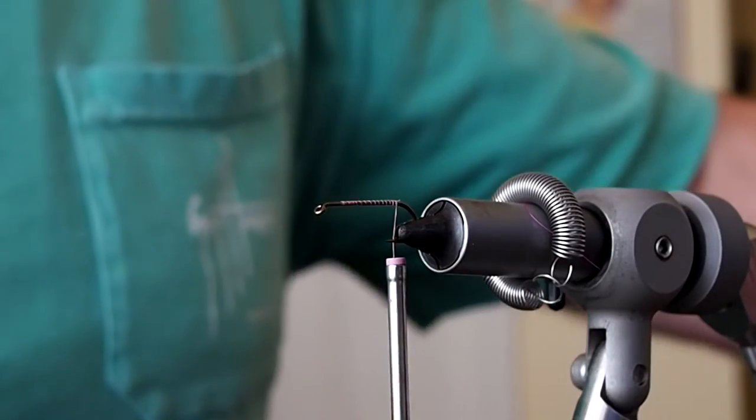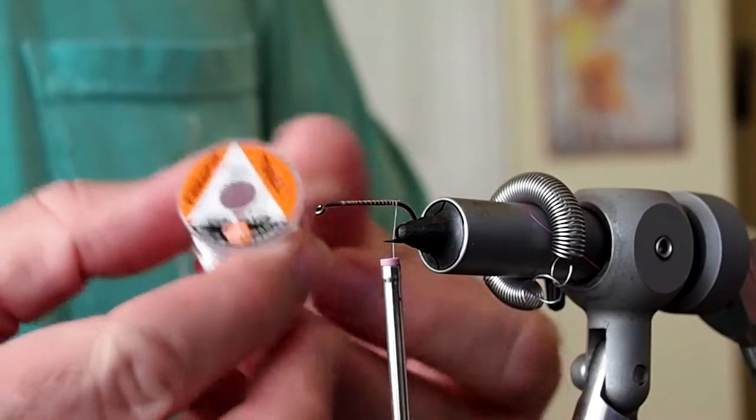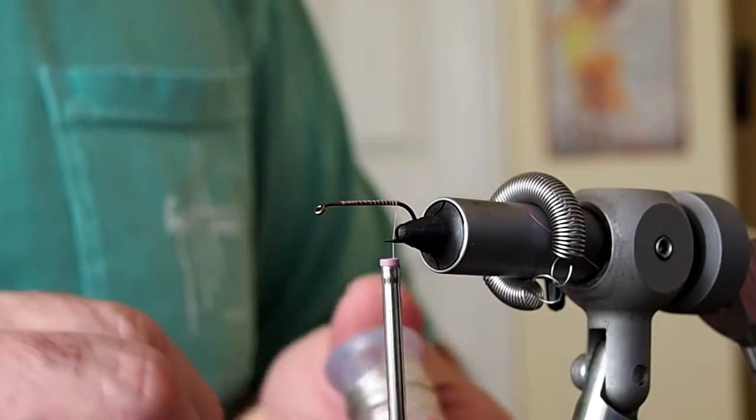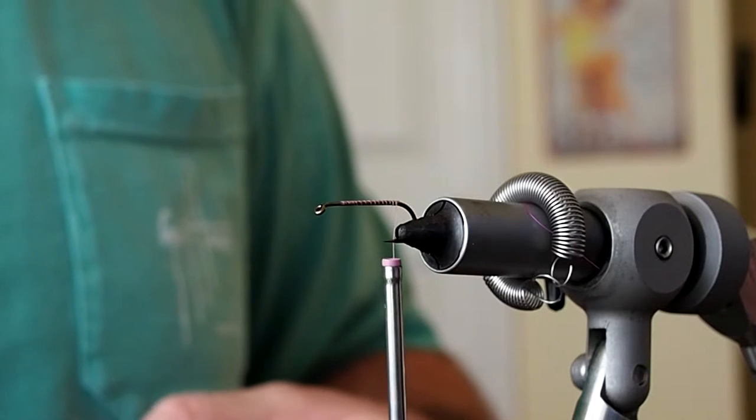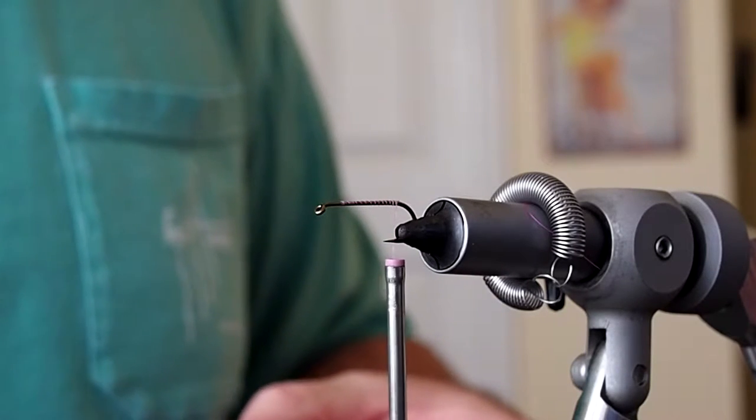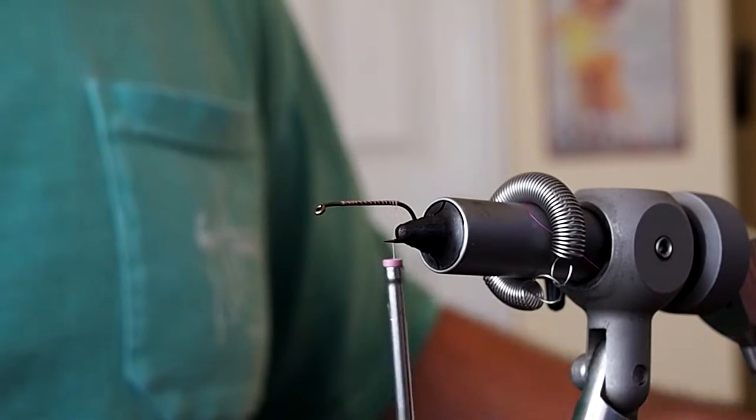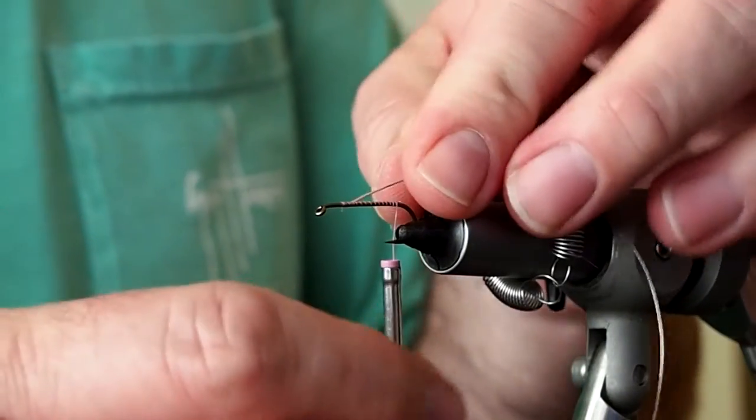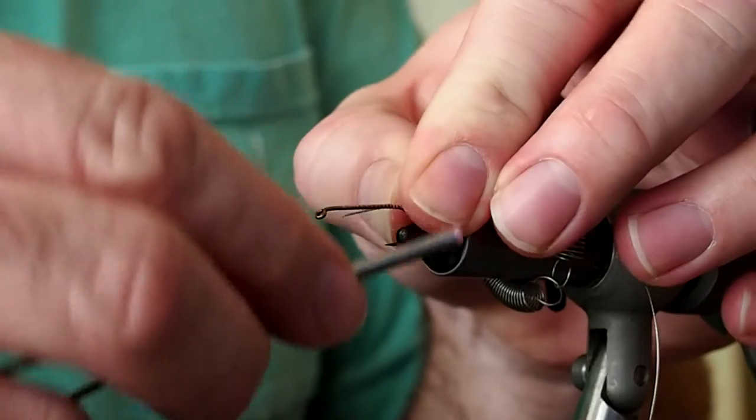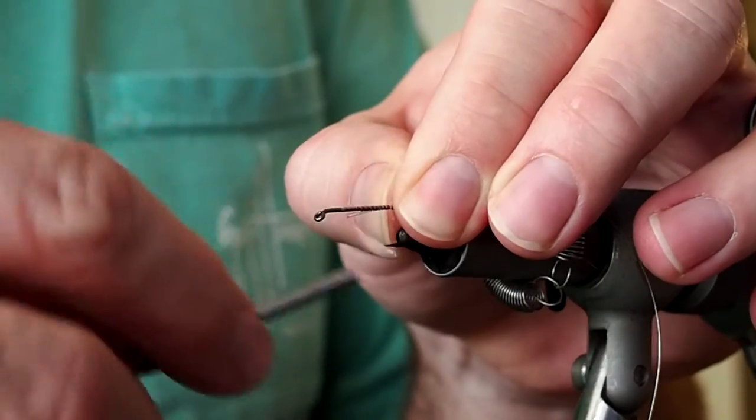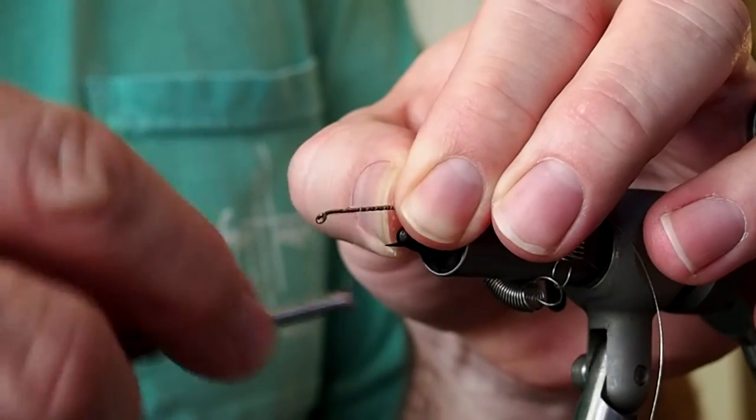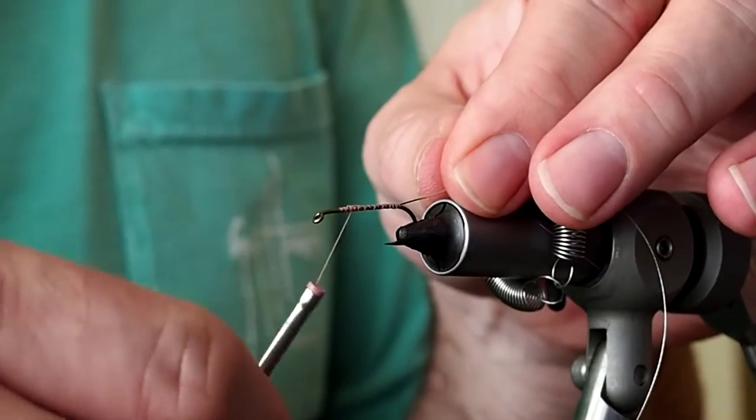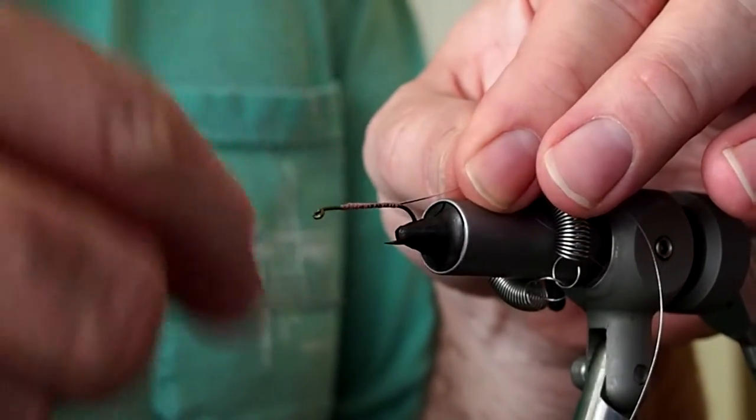And then I'm going to tie in some medium oval tinsel and I need probably about 6 inches of that. I like to tie that in at the butt and just leave a tag long enough to come all the way up to your tying point. And then we'll bring our thread back down.